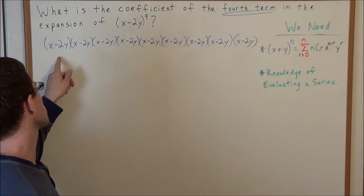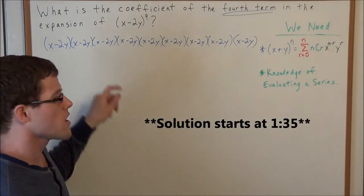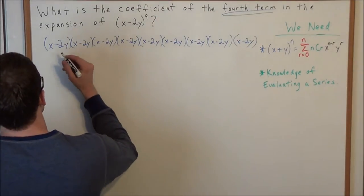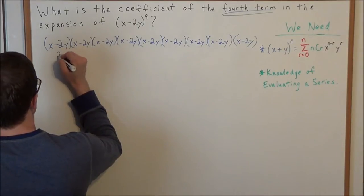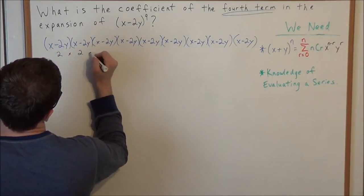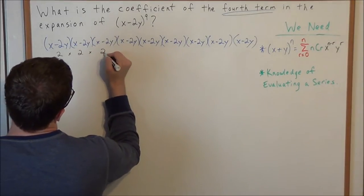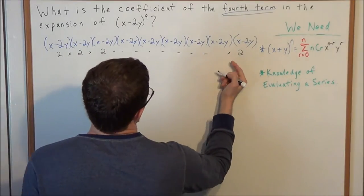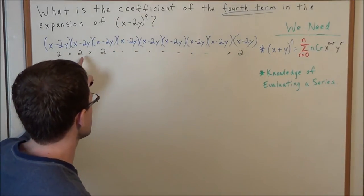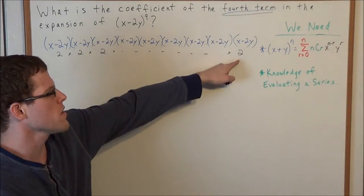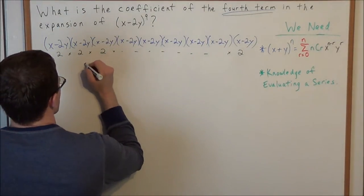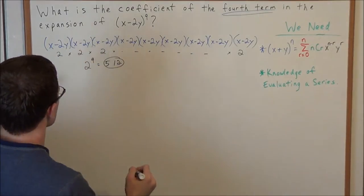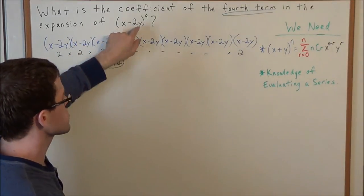The naive way to do this would be to multiply x minus 2y by itself nine times. But the problem with this method is that we have two terms in the first binomial being multiplied by two terms in the second, and this continues all the way to the last binomial. So we would have 2 times itself nine times — 2 to the ninth, or 512 pieces, once we expanded x minus 2y to the ninth.